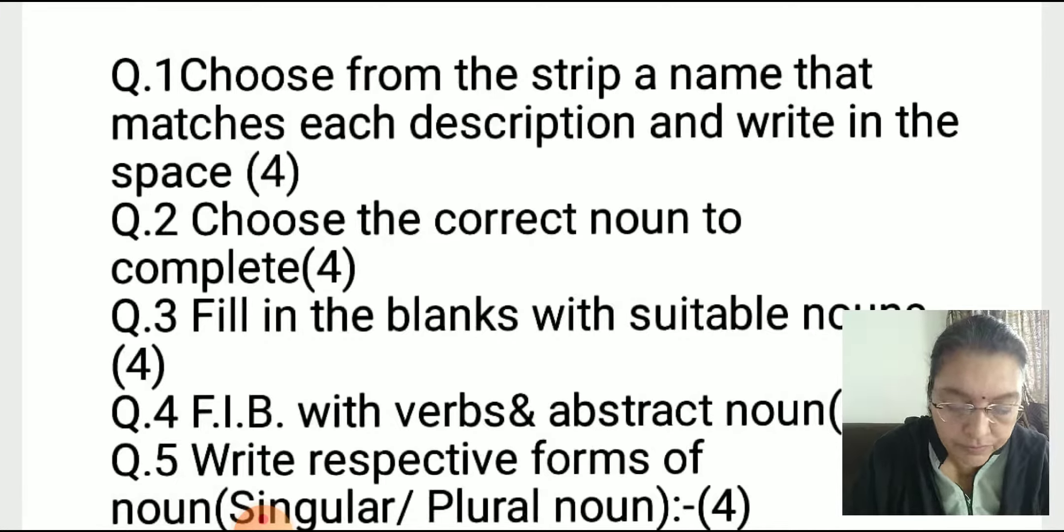Bachche, page number 2, Unit 1, Exercise C. Read the descriptions given below. Choose from the strip a name that matches each description and write in the given space. In this question, sells sweets and pastries. You have to choose correct answer from option: confectioner.